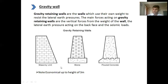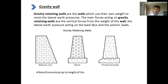The economical height of a gravity wall is up to 3 meters. If you have a height greater than 3 meters, it becomes uneconomical. The reason is that when we increase the height, we must increase the dimensions of the wall, which increases the material and therefore increases the cost.